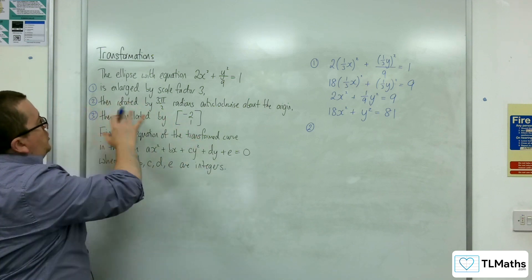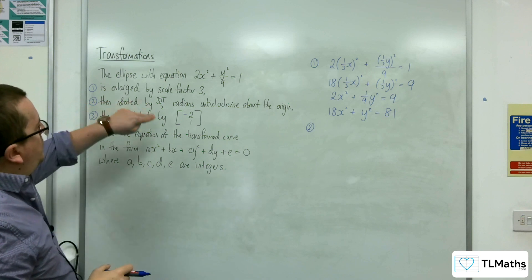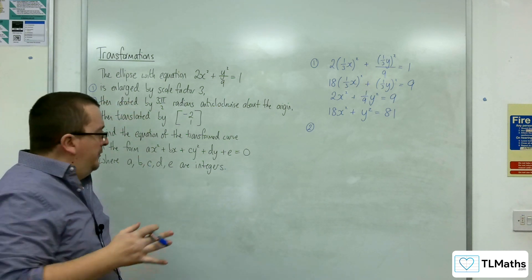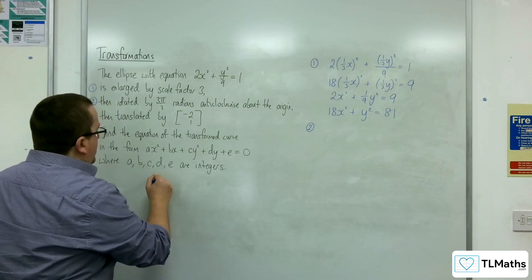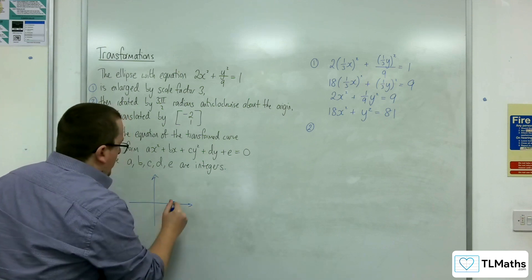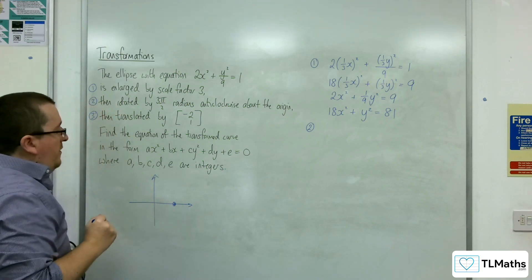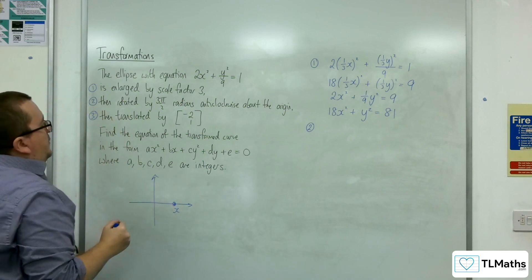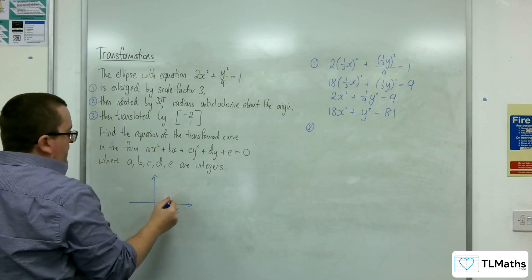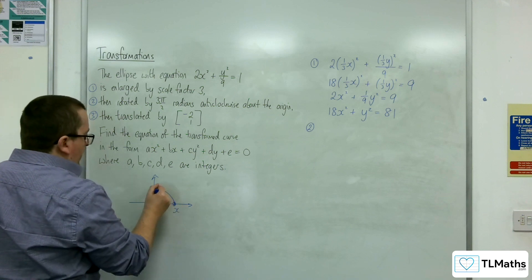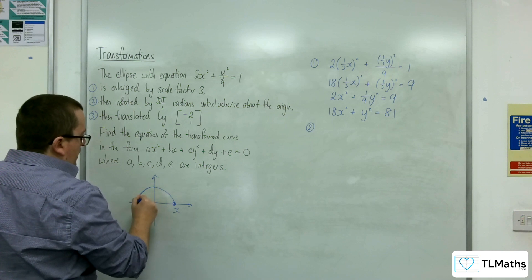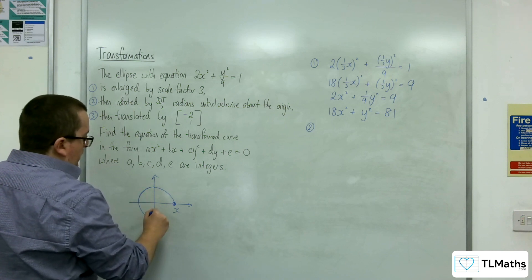So transformation number 2 is rotated by 3 pi over 2 radians anticlockwise about the origin. So let's draw a little diagram so we can visualize what's going on there. So my point there, x, is being rotated 3 pi over 2 radians. So that would be pi over 2, then pi, 3 pi over 2. We'll get me down here, which is minus y.